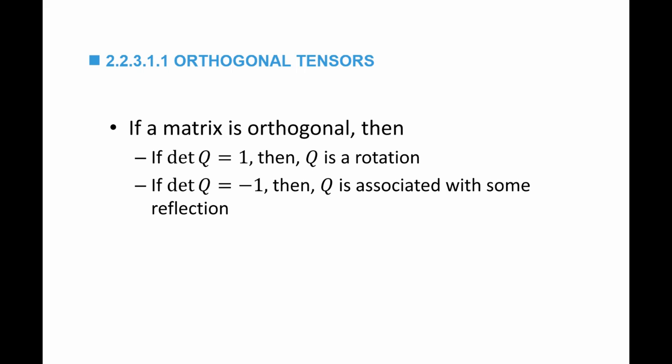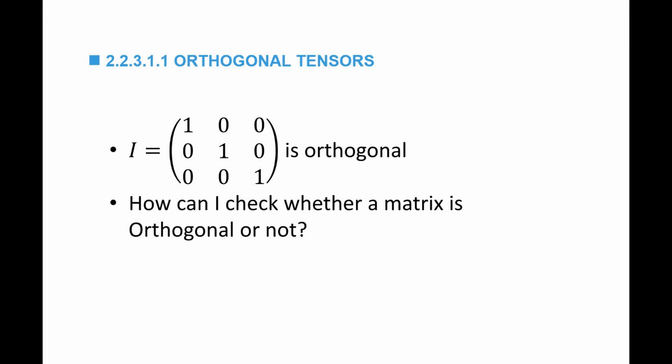We saw that the determinant of an orthogonal matrix is either 1 or negative 1. If it's 1, we call Q a rotation. If it's negative 1, Q is associated with some reflection. One important example of an orthogonal matrix is the identity matrix I, which is orthogonal because I multiplied by I transpose equals I, satisfying the orthogonal property.